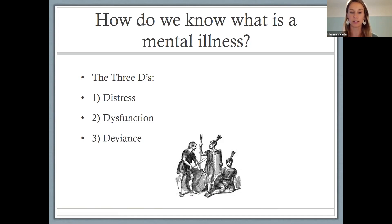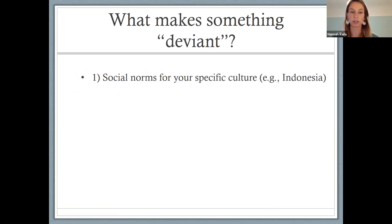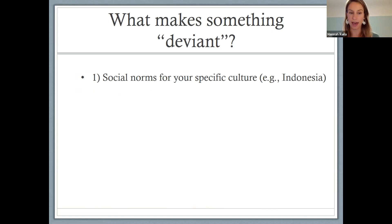The question of deviance is really interesting because it's constantly changing and it's also subjective — it's not black and white. Some things that help us determine whether something is deviant include social norms for your culture. Another example: there is a culture in Indonesia that has a celebration where one day every year they dig up loved ones' corpses, walk them around, dress them up, hang out with them for the day, and then put them back. That is very normal for that culture on that day, but if someone walked into your room holding a corpse in a way that was not socially normative, that would be deviant behavior and might be indicative of a mental illness.